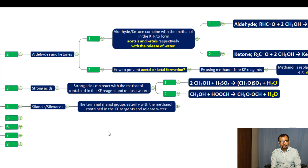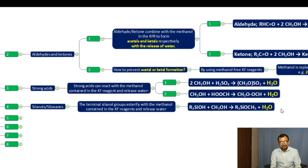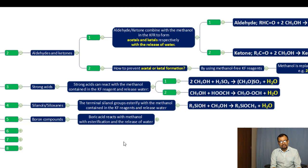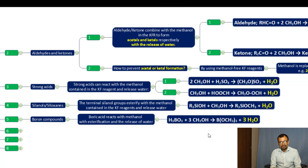The fourth side reaction involves terminal silanol and siloxane groups, which esterify with the methanol in the KF reagent and release water molecules. The Si–OH groups react with the methanol present in the KF reagent and release water. The fifth side reaction involves boron compounds: boric acid reacts with methanol via esterification and releases water molecules.